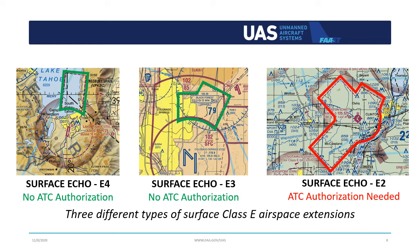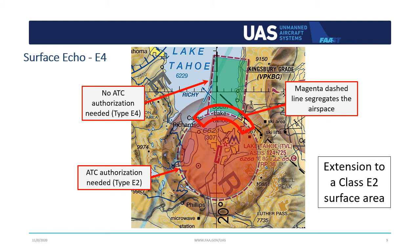Class Echo extensions exist to allow manned aircraft to make safe approaches to the runways in bad weather. Just remember that while Echo 4 and Echo 3 don't require ATC authorizations, Echo 2 does. Echo 4 airspace is an extension to Class Delta or Surface Class Echo or Echo 2 airspace. I've highlighted green and red areas to help clarify. This aeronautical chart image shows an Echo 4 extension in the green-shaded area. The key to recognizing this as an Echo 4 extension is the magenta dashed lines that segregate the green-shaded area from the red-shaded area. Echo 4 extensions do not require ATC authorizations.